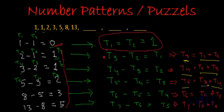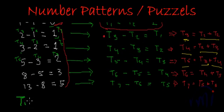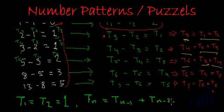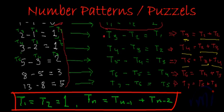So how to write it in general form? The general form for this pattern will be: t1 equal to t2 is equal to 1 — this is fixed. And after that, any term tn is equal to t(n-1) plus t(n-2). So this is the general format for this series. And this particular series has a name — it is called the Fibonacci series.